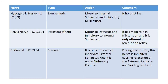In this table I have summarized the functions of all three nerves. First, the hypogastric nerve — as I mentioned, it is sympathetic in nature. Its action is motor to the internal sphincter and inhibitory to the detrusor; it basically holds urine. Next is the pelvic nerve, which is parasympathetic — it is motor to the detrusor and inhibitory to the internal sphincter. It has the main role in micturition and is the only efferent in the micturition reflex.